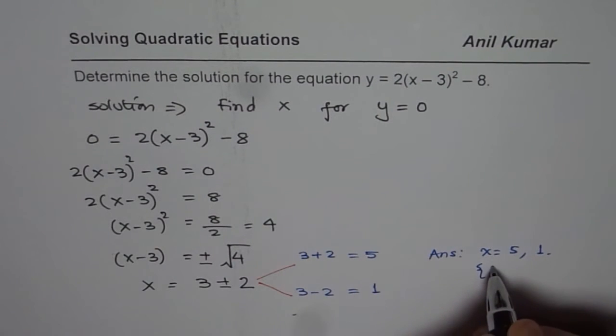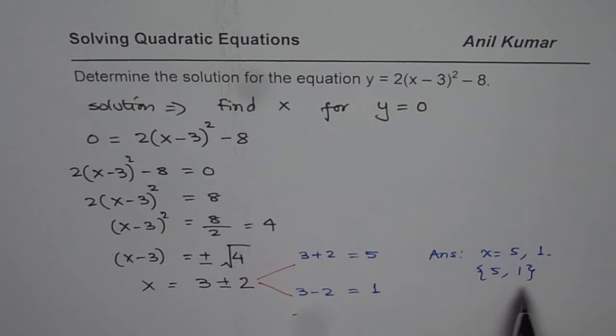At times, you can also write solutions in curly brackets, which gives you all the solutions. That is a set of solutions. 5 and 1 is the solution for this given equation. I hope that helps. Thank you.